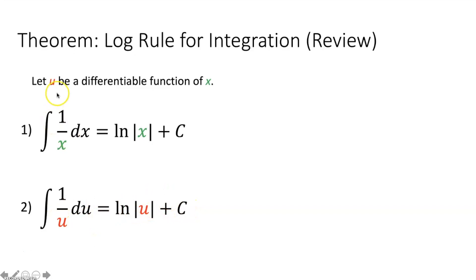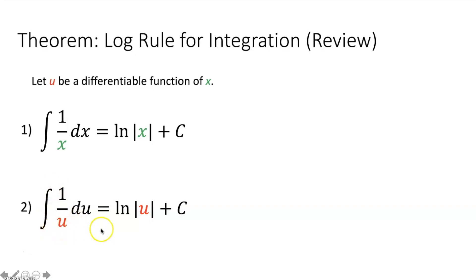So how is this different? It's because u is a differentiable function of x. Meaning that if your denominator is not just x, but instead a function in terms of x, you can use u substitution and still get that the integral of 1 over u du is equal to the natural log of the absolute value of u plus c.